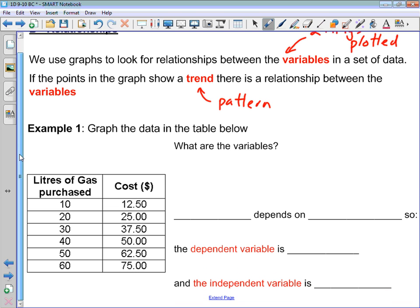In example one here, we are asked to graph the data in the table below. We've got our table right here with two columns. Now the first question we're asked here, what are the variables? Well, in a table, the variables are always listed in the heading of the table. So our two variables here are liters of gas and the cost. And they often have units associated with them, so the cost is measured in dollars and liters of gas is obviously measured in liters.